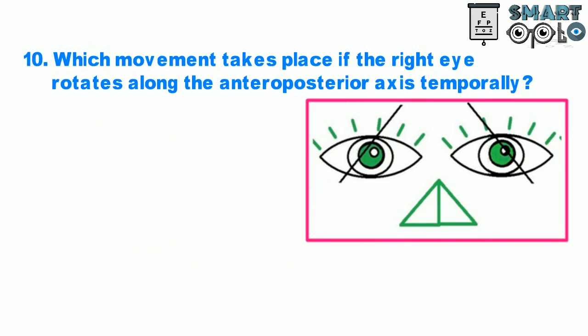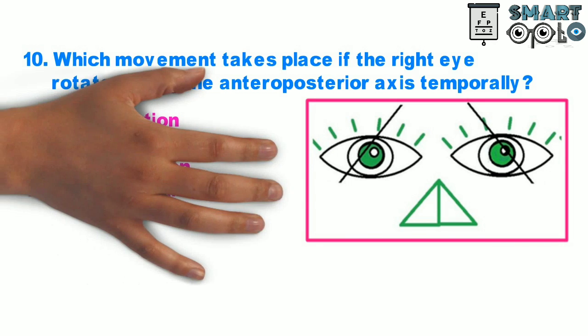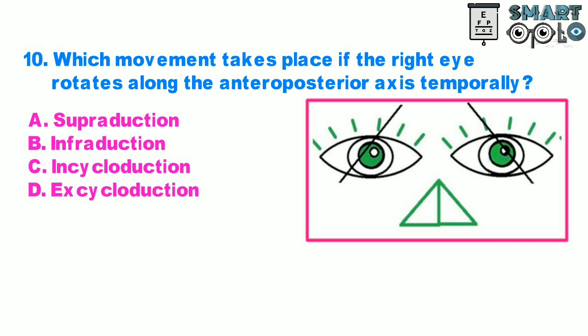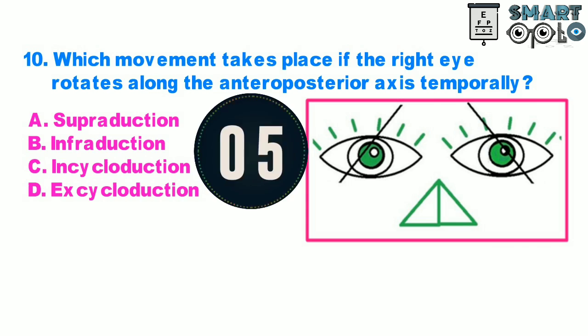Question 10. Which movement takes place if the right eye rotates along the anterior-posterior axis temporally? A. Supraduction, B. Infraduction, C. Incycloduction, D. Excycloduction.